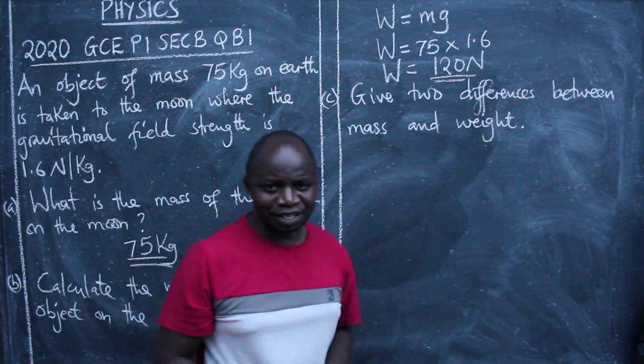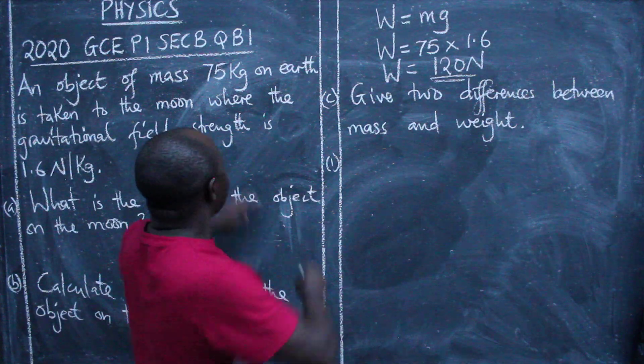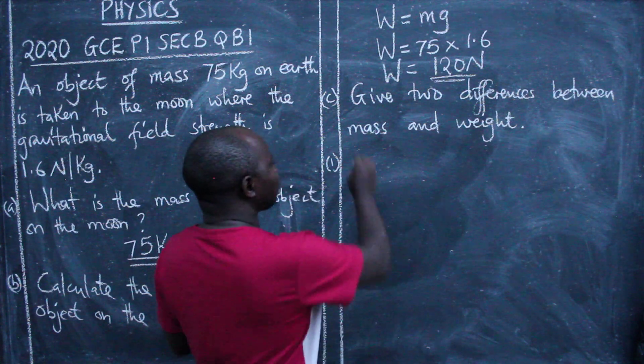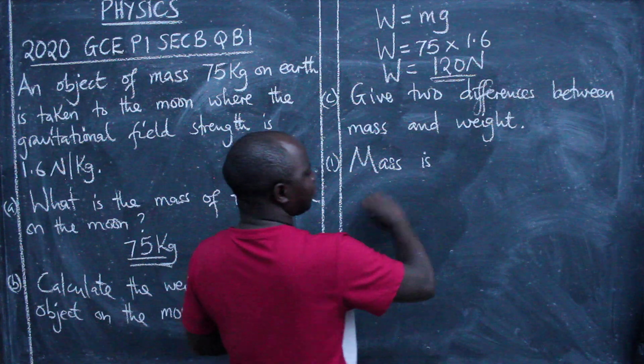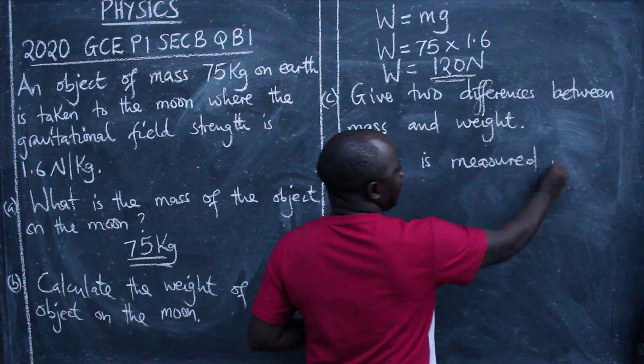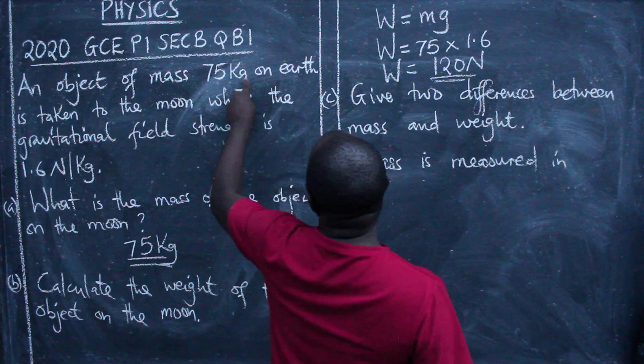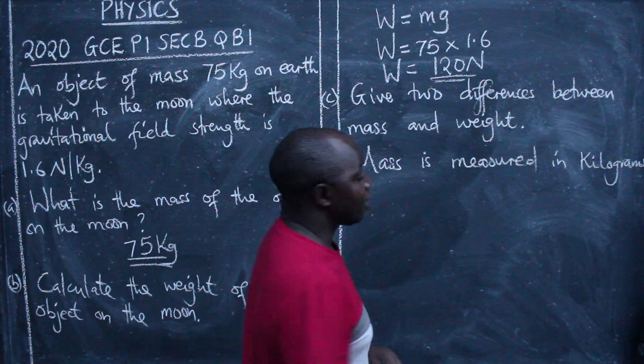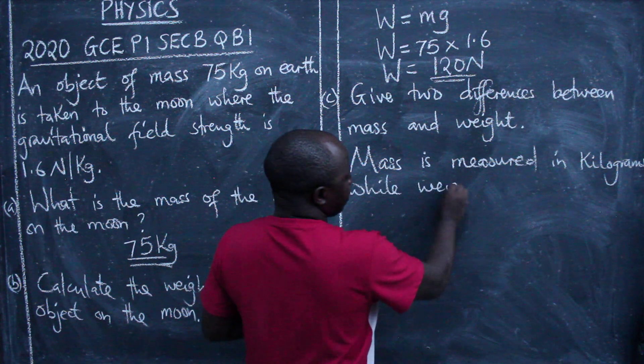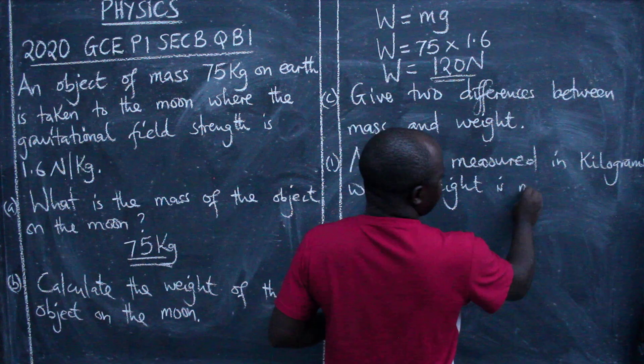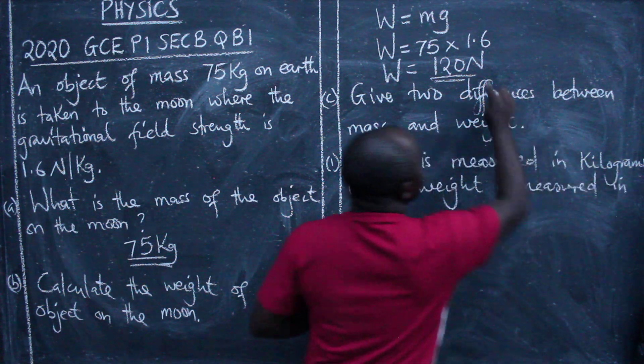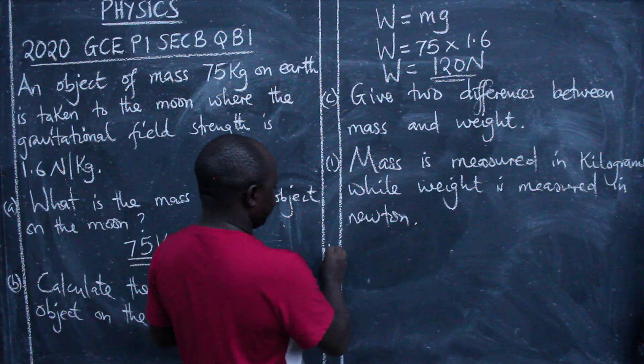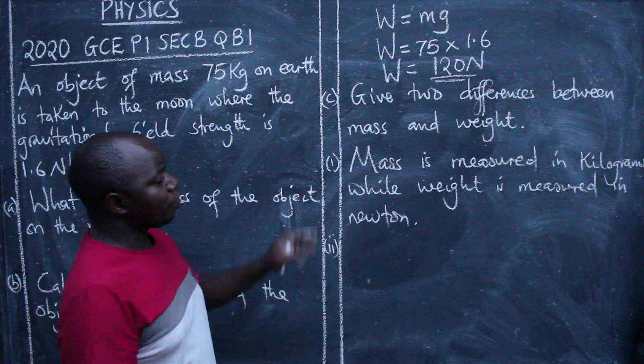Give two differences between mass and weight. The first one, there are a lot of differences between mass and weight, but the first one you can say mass is measured in kilograms, while weight is measured in Newtons. That is the first answer.